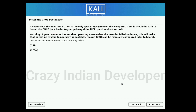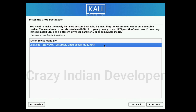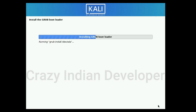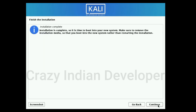In the GRUB bootloader section, select Yes and continue. Now select the second hard disk option and continue.